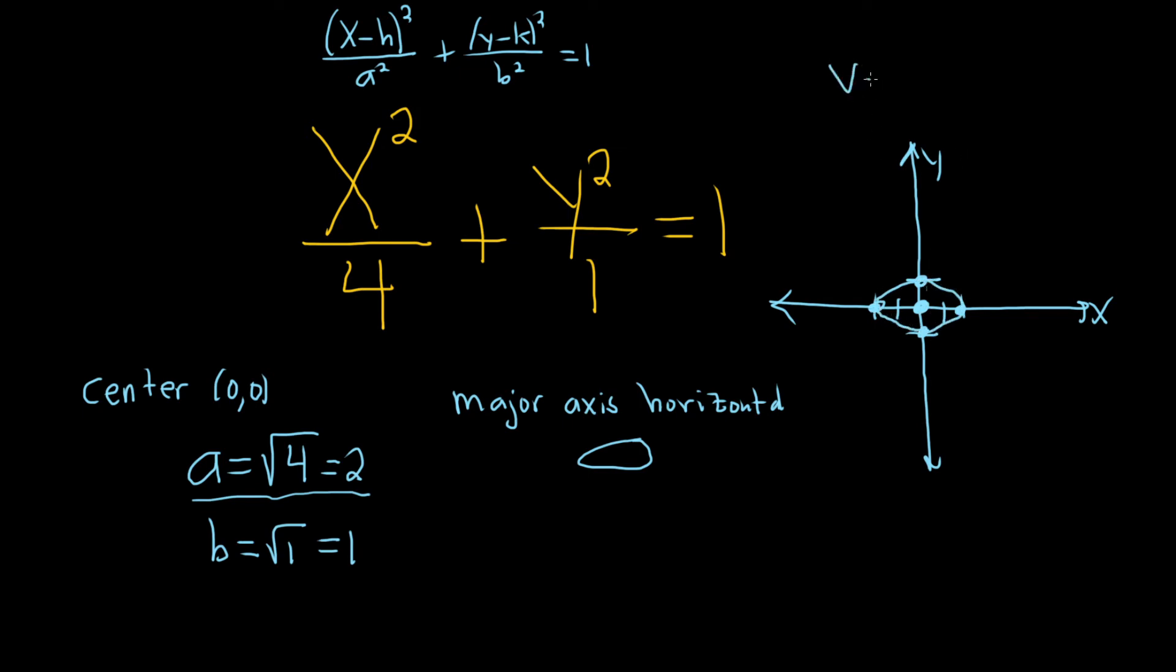So the vertices, let's go ahead and specify them completely. Those are the endpoints of the major axis. So it would be the ones on this one here and this one here. So that would be negative 2,0 and 2,0. Those would be the vertices.